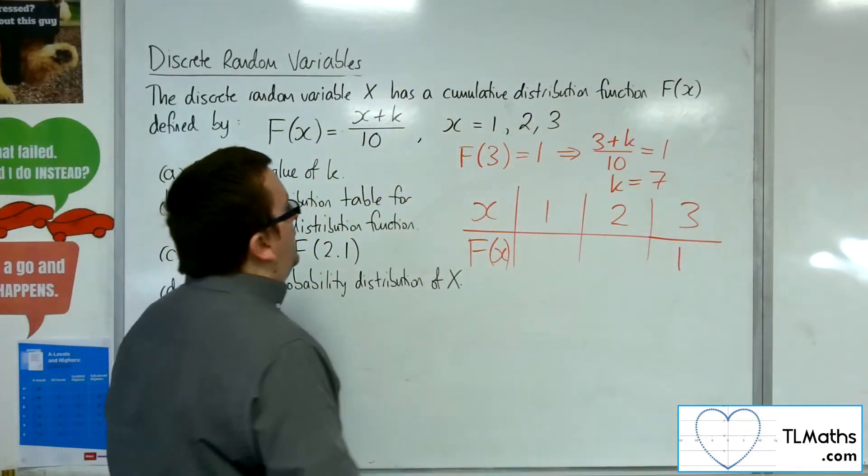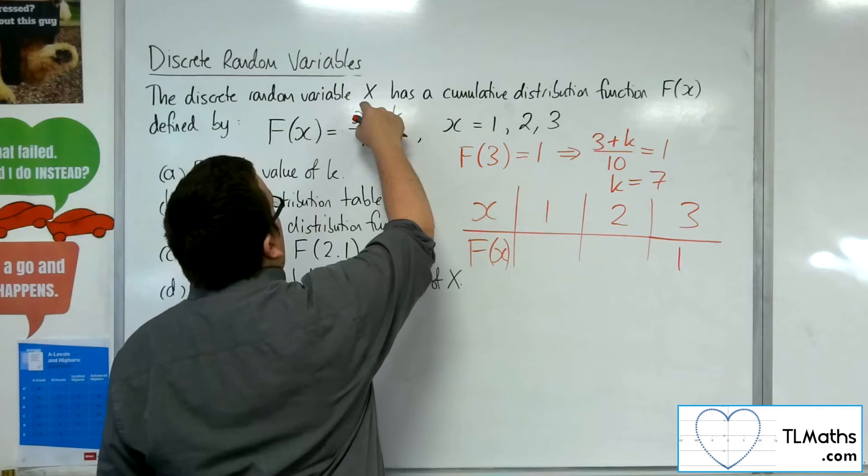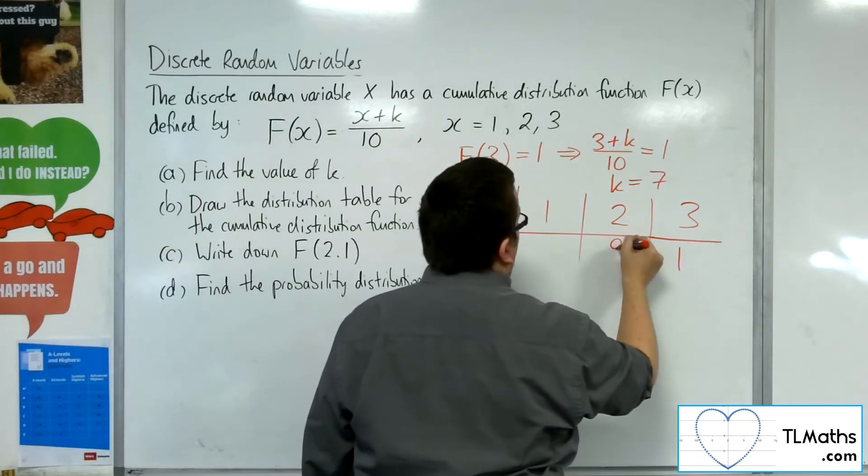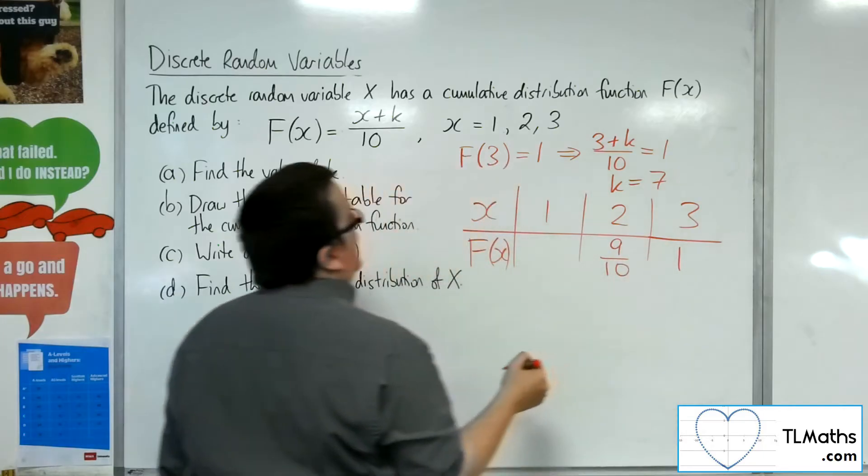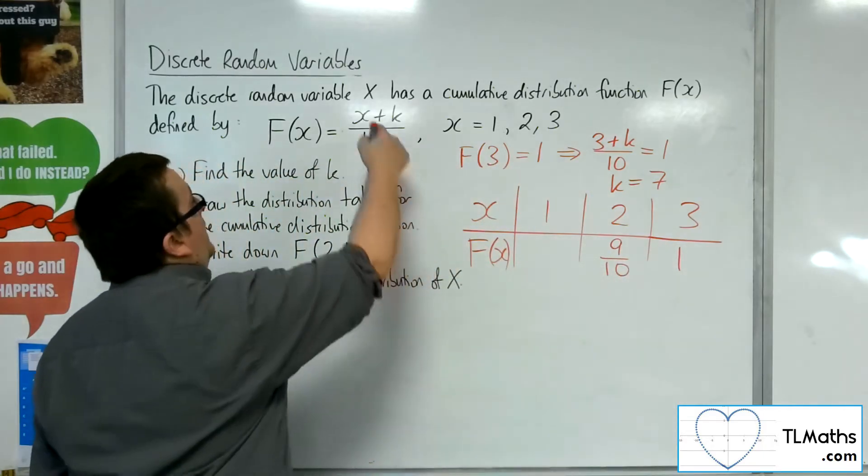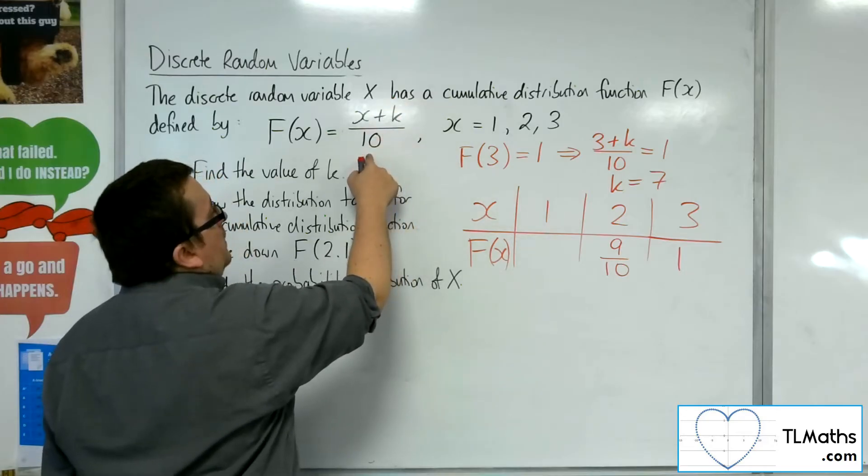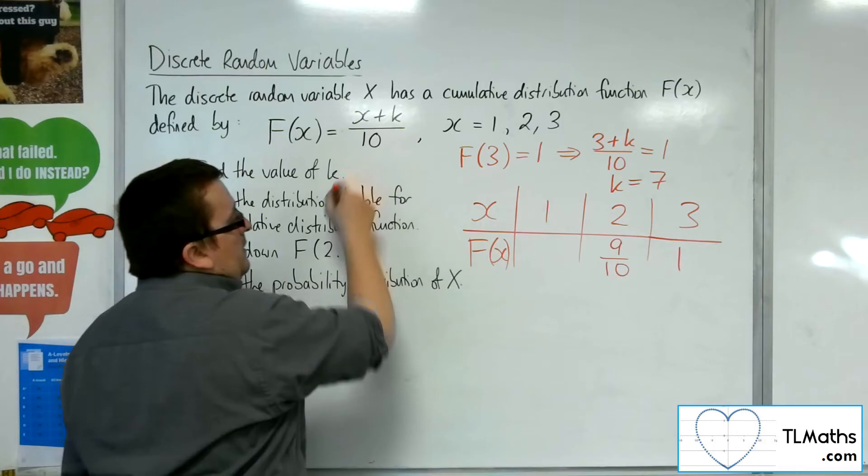Now when x is 2, I'm going to have 2 plus 7 over 10, so 9 over 10. And when x is 1, I'm going to have 1 plus 7 over 10, so that must mean I have 8 over 10.